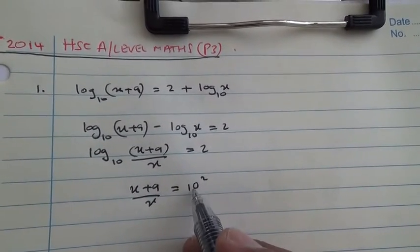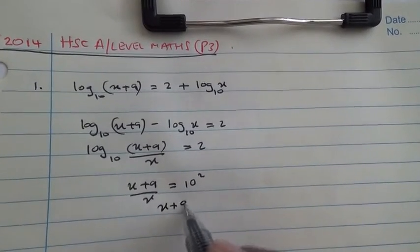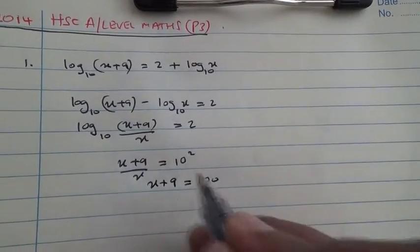Therefore, 10 to the power of 2 is 100. Therefore, x + 9 is equal to 100 times x.